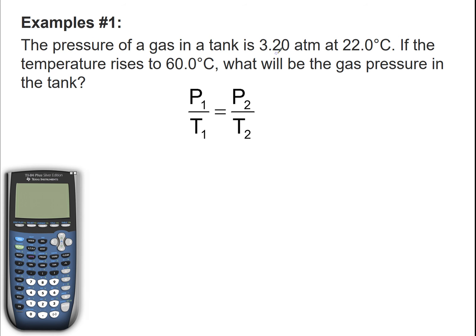We have a pressure of a gas in a tank at 3.20 atm at 22 degrees Celsius. If the temperature rises to 60 degrees Celsius, they want to know what will be the new gas pressure. Once you have fractions with variables, go ahead and cross-multiply to get rid of the fractions.